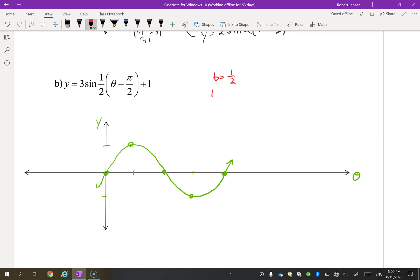Okay. b is a half. So the new period is 2π divided by a half, which is 4π. So that means we have a pretty easy new scale to figure out. 4π divided by 4. So I have π, 2π, 3π. My amplitude is 3 to negative 3, because that's the a value.